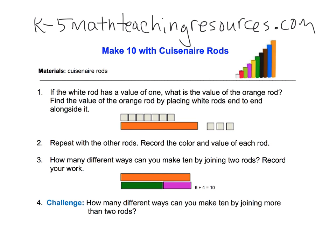Another idea I found at k5mathteachingresources.com. Give them a shout out. In this case, if you don't want to use Rek and Rex, maybe you want to use Cuisinare rods. Basically what this is saying is, if you want to use only two rods, that's the key thing. Two rods, record all the different ways that you can make ten.